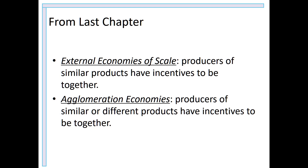Last chapter we talked about economies of scale, external economies of scale, and agglomeration economies. The difference between them is subtle. External economies of scale is when producers of similar products have incentive to be together — for instance, if you produce product A, which is in the same industry as product B, you have incentive to be together, perhaps sharing suppliers. Agglomeration economies broaden that concept: producers of similar or different products have incentive to be together.